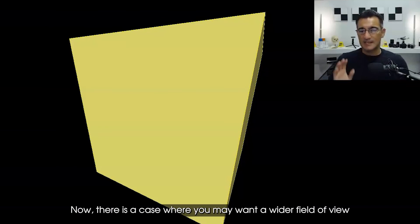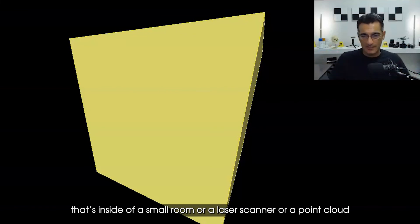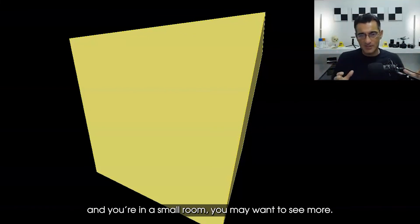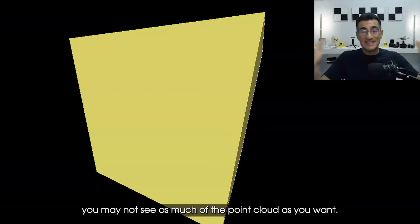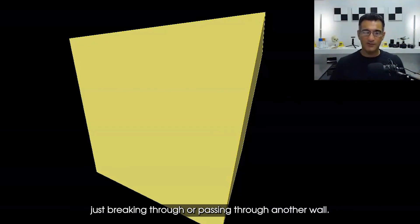Now there is a case where you may want a wider field of view, and that is when you're inside of a small space. If you have a photogrammetry model that's inside of a small room or a laser scanner or point cloud and you're in a small room, you may want to see more. If you have 50 degrees you may not see as much of the point cloud as you want, and as you try to back the camera out to see more you end up just breaking through or passing through another wall.